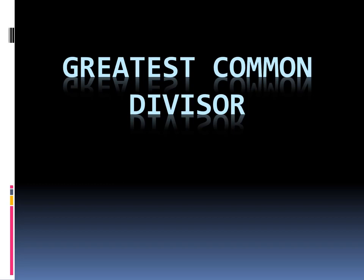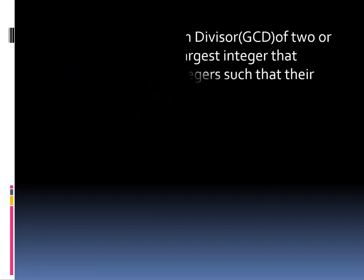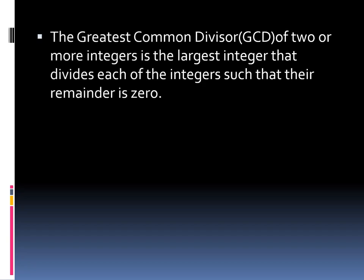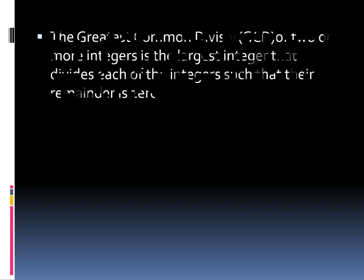Good day everyone and welcome to my topic which talks about the greatest common divisor. The greatest common divisor, or the GCD, of two or more integers is the largest integer that divides each of the integers such that the remainder is zero.